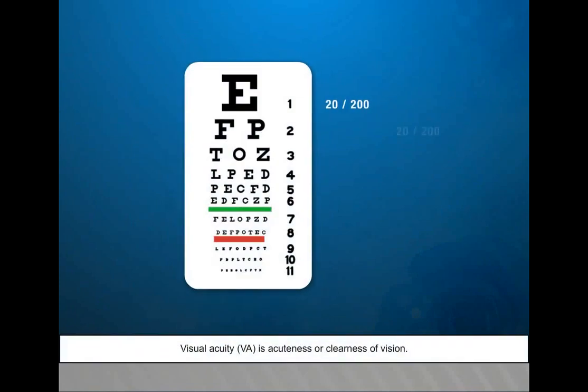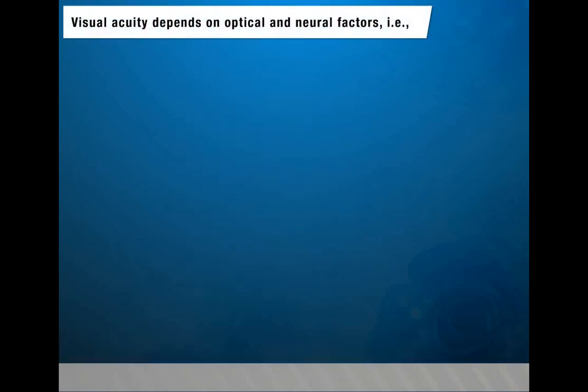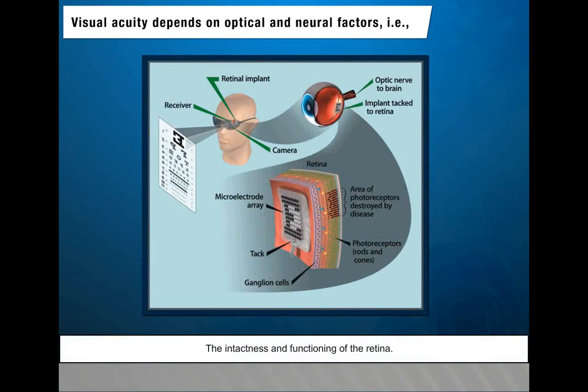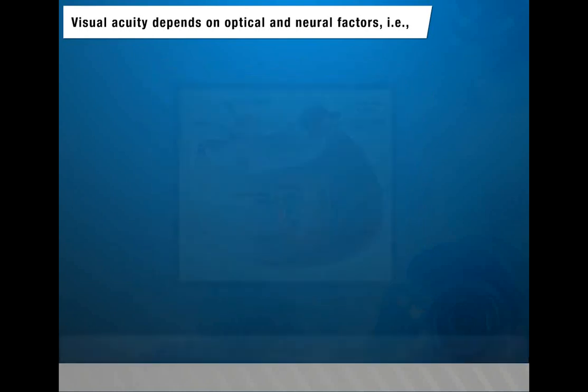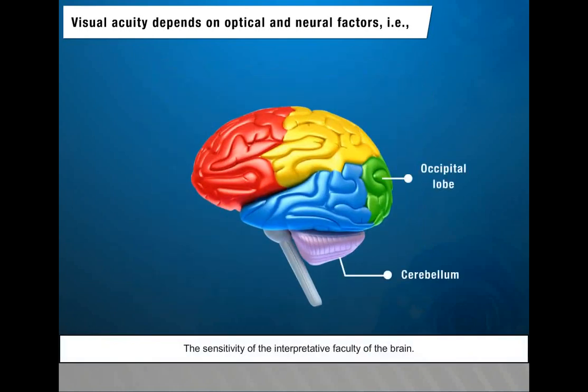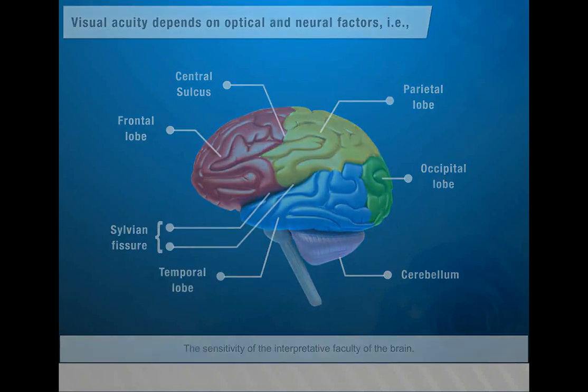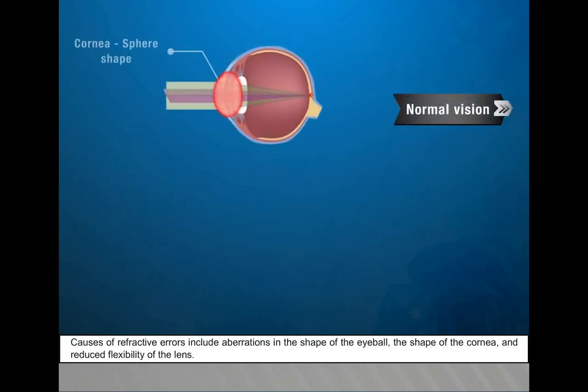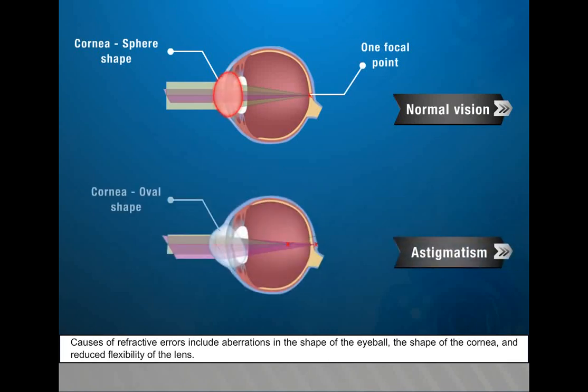Visual acuity VA is acuteness or clearness of vision. Visual acuity depends on optical and neural factors, i.e. the sharpness of the retinal focus within the eye, the intactness and functioning of the retina, and the sensitivity of the interpretative faculty of the brain. A common cause of low visual acuity is refractive error, i.e. ametropia - how the light is refracted in the eyeball. Causes of refractive errors include aberrations in the shape of the eyeball, the shape of the cornea, and reduced flexibility of the lens.